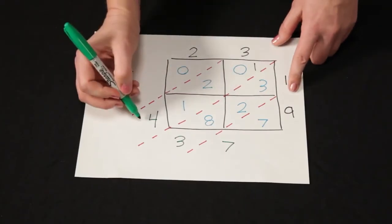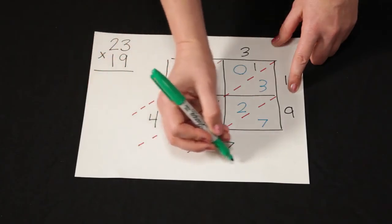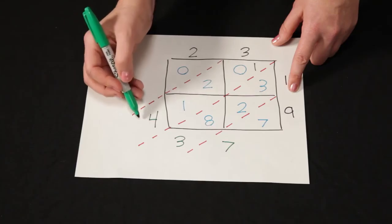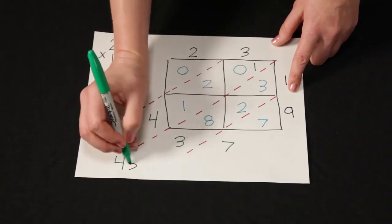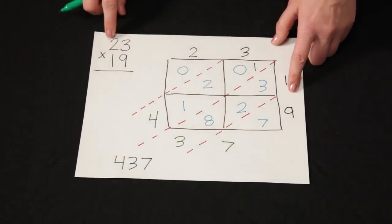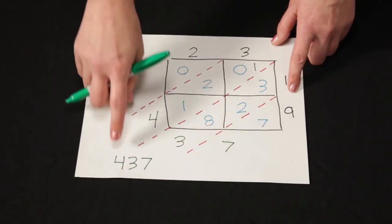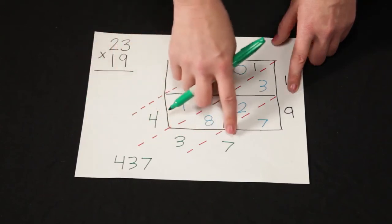So to calculate my answer I start here and move around the lattice. So my answer is four hundred thirty-seven. So twenty-three times nineteen is four hundred thirty-seven.